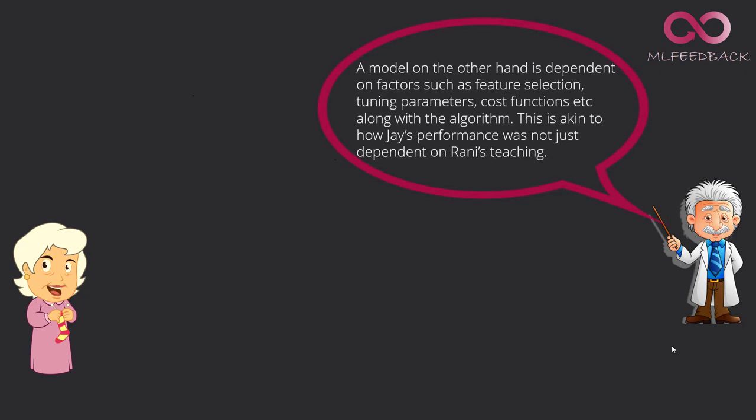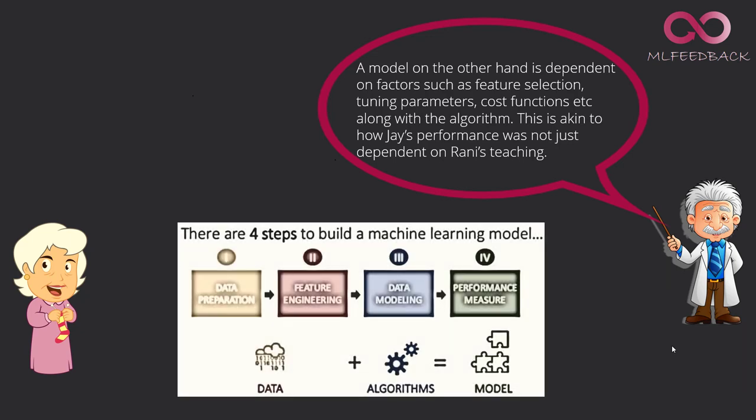Whereas, a model on the other hand is dependent on factors such as feature selection, tuning parameters, cost functions, etc. A host of other things that we are going to see in subsequent videos along with the algorithm. Algorithm is just one of the inputs to the model.